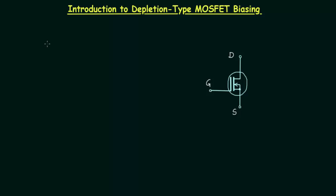We have completed JFET biasing and now we will start MOSFET biasing. Out of depletion type MOSFET and enhancement type MOSFET, we will start with depletion type MOSFET because it is similar to JFET. If you compare the transfer curve in case of JFET and also in case of depletion type MOSFET, you will find they are almost the same. I will explain why they are almost same.